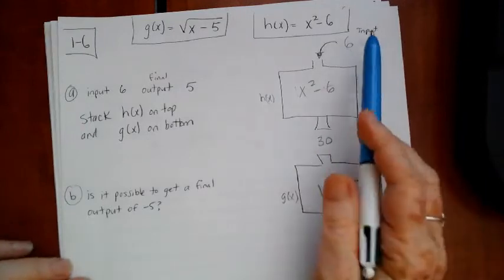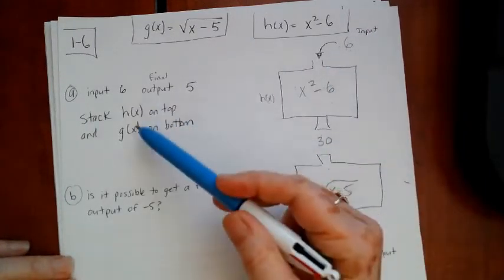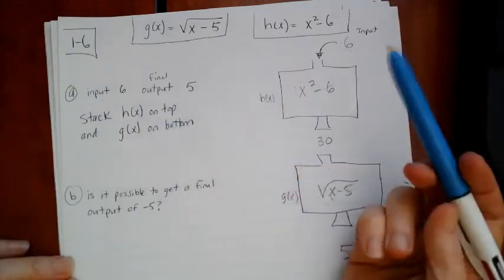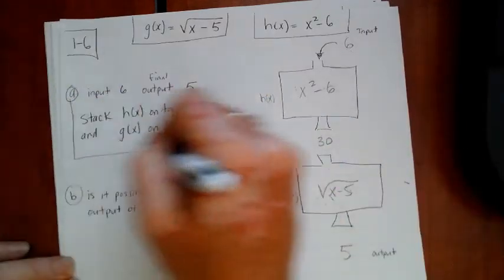So you have to put your input into h of x first. And then that output goes into g of x and you get your final output. So that's the answer to the first question.